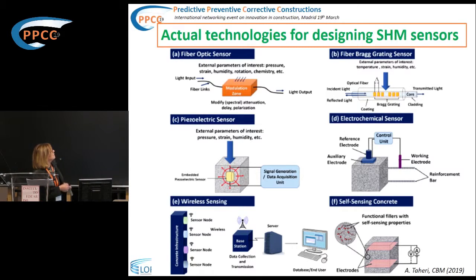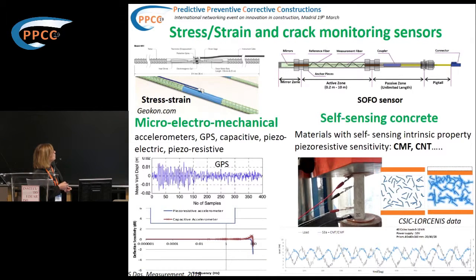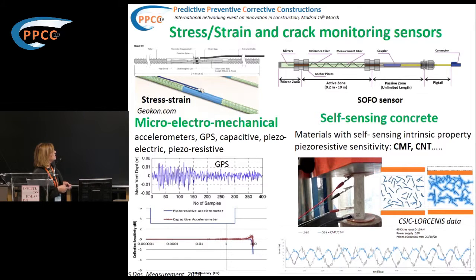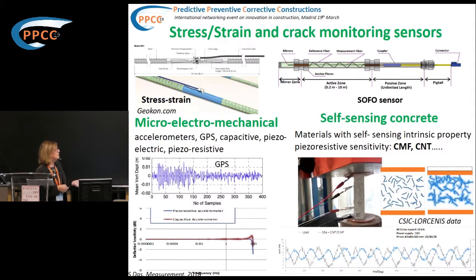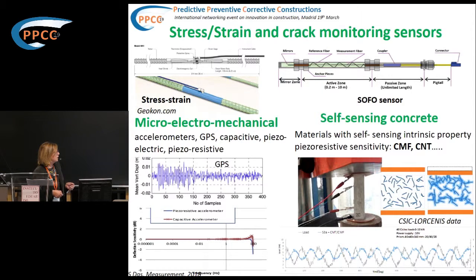Some examples: for strength and strain monitoring, sensors located close to the reinforcement measure strain. Fiber optic sensors also measure strain. Micro electromechanical sensors with accelerometers, even GPS, can provide piezoelectric and piezoresistive information. Or self-sensing concrete implementing certain materials with intrinsic sensing properties — meaning they have a certain reaction when a load is applied. We have been working in the Lothenis project on measuring the piezoresistivity of concrete.